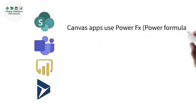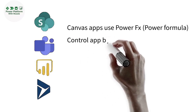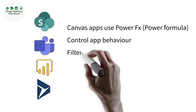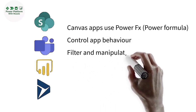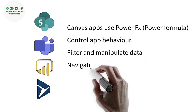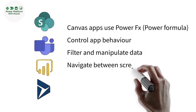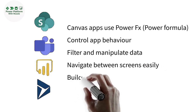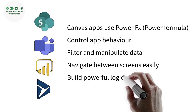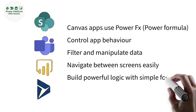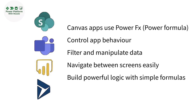In a Canvas app, you use Power FX — the Power Formula language — which allows you to control how your app behaves, like showing or hiding buttons, filtering data, or navigating between screens. It works just like Excel formulas, letting you build powerful logic without writing traditional code.